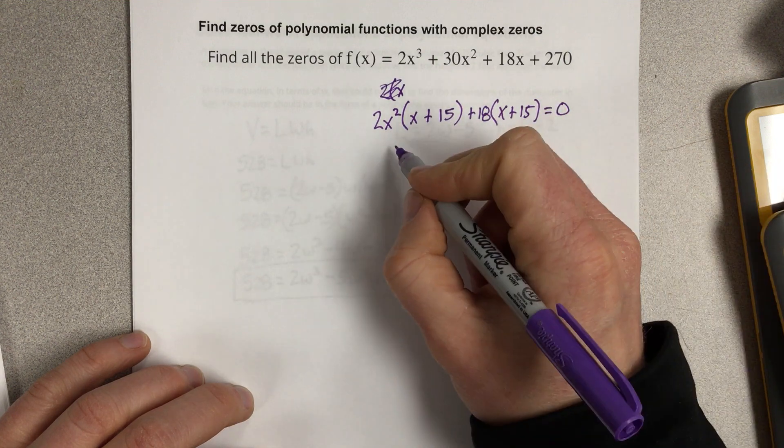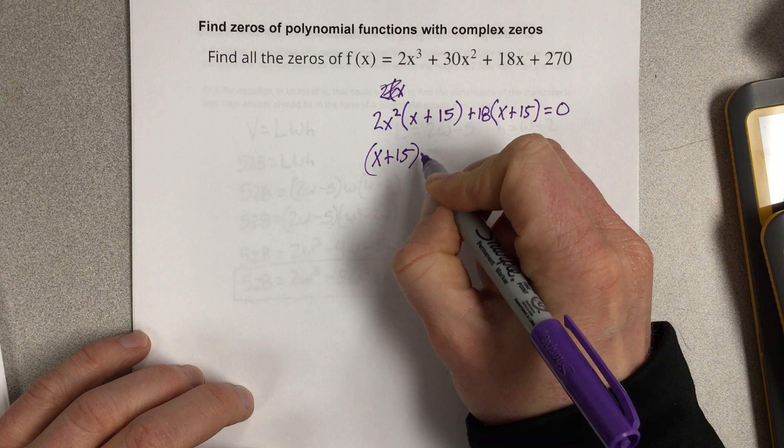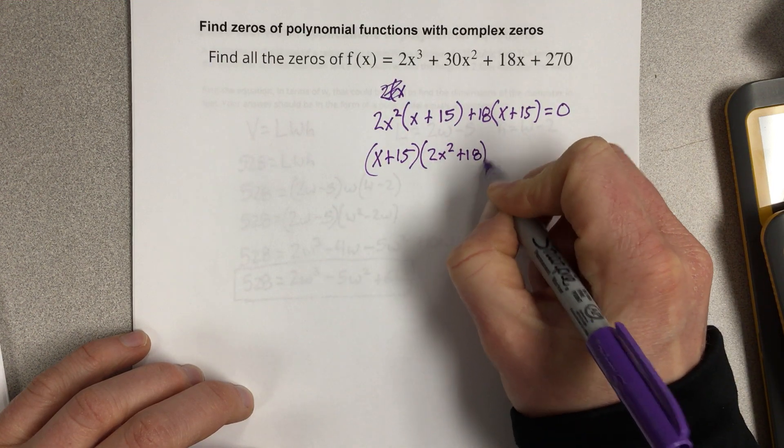Let's factor x plus 15 out, and that would be x plus 15 times 2x squared plus 18 equals zero.